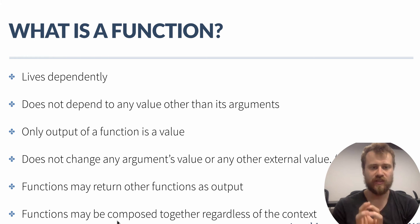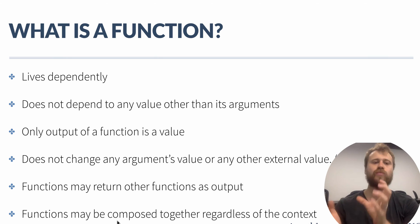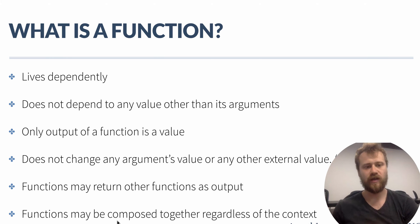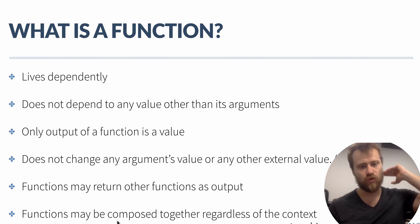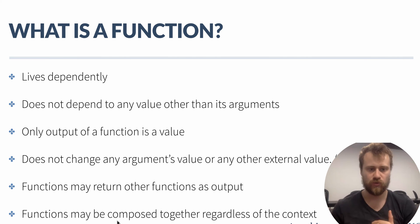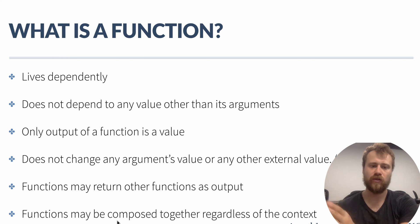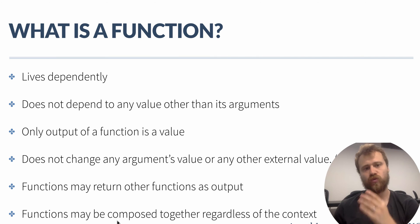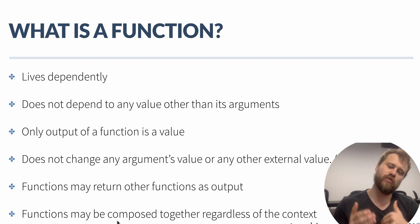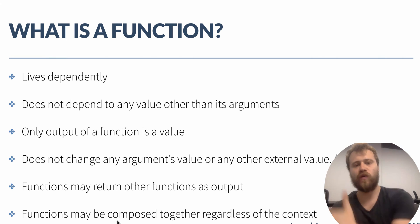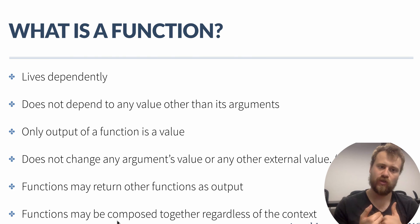A function does not need an object instance or class scope to live, and it does not depend on any external value other than its arguments. A function may output only one value; other than that, it cannot change any value. This modification is called a side effect, and we don't want side effects in pure functional programming.